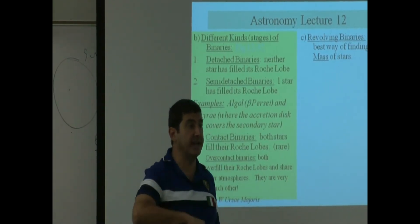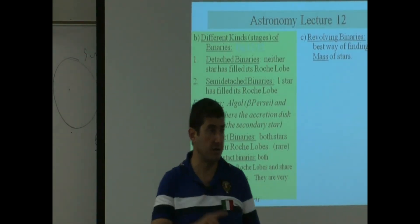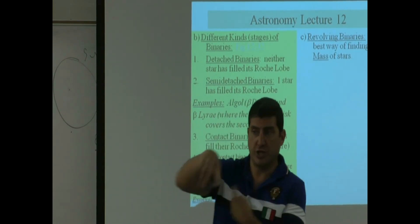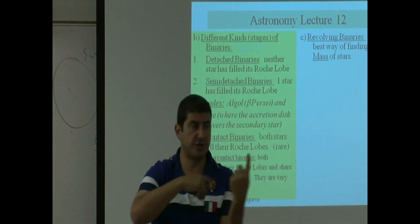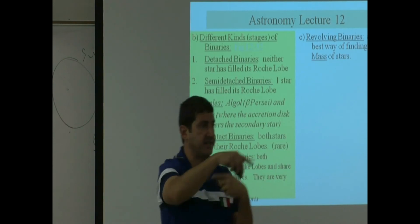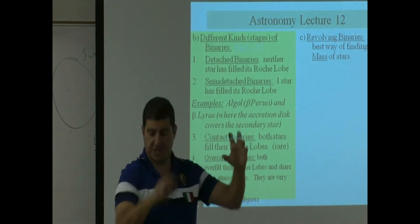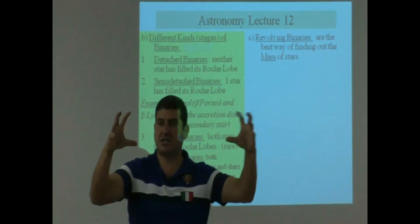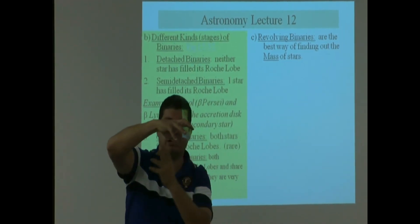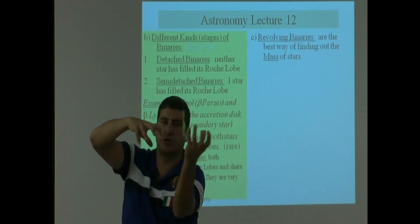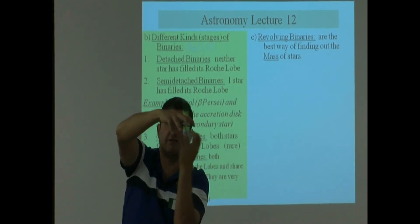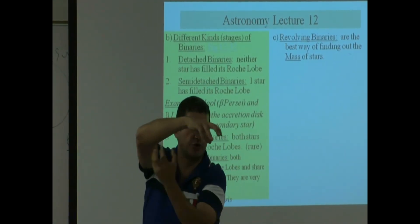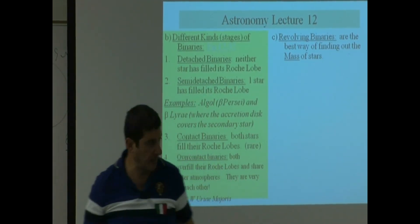Besides transferring mass to each other, binaries are also revolving around each other. They're going around each other, around their common center of mass. The heavier one is moving shorter and the lighter one is moving around that. So they're both moving around their center of mass.